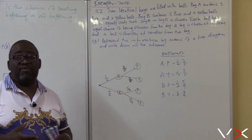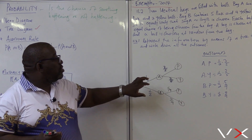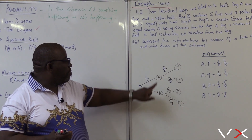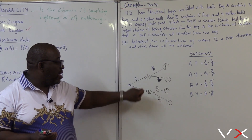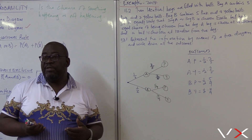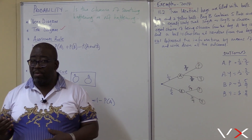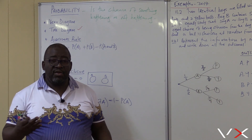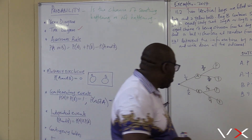You'll get full marks for writing this tree diagram correctly. What was important here is to realize that there are five balls in bag A and nine balls in bag B. That's how you go about doing the tree diagram. We want to do one more tree diagram while it's still fresh in our minds so we can continue to do more problems.